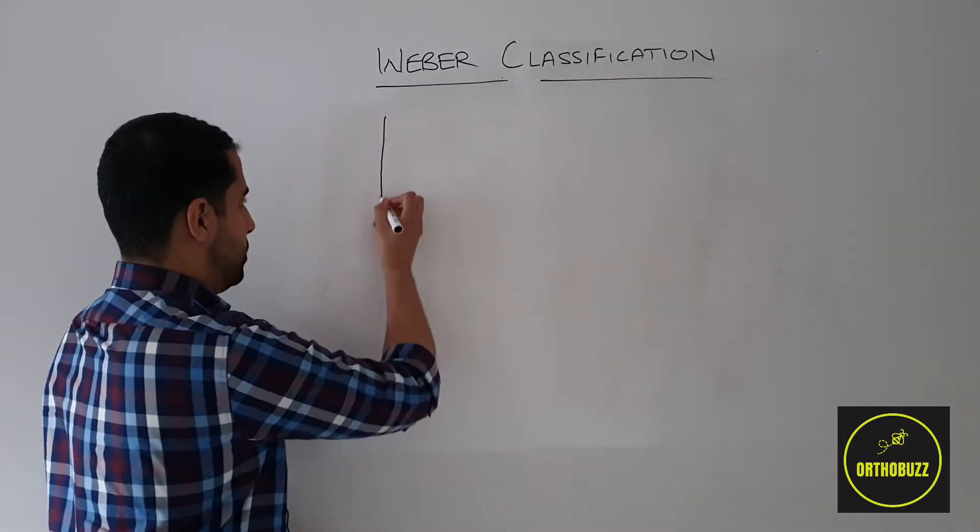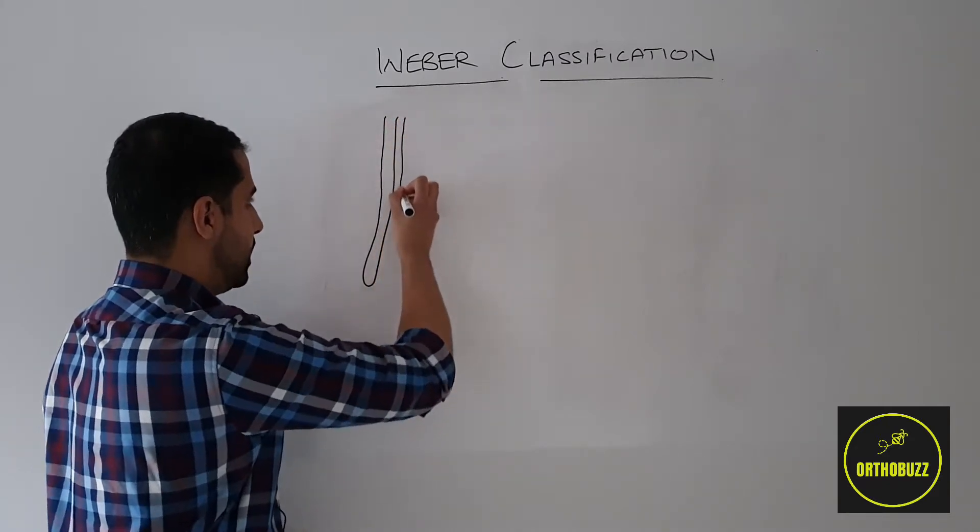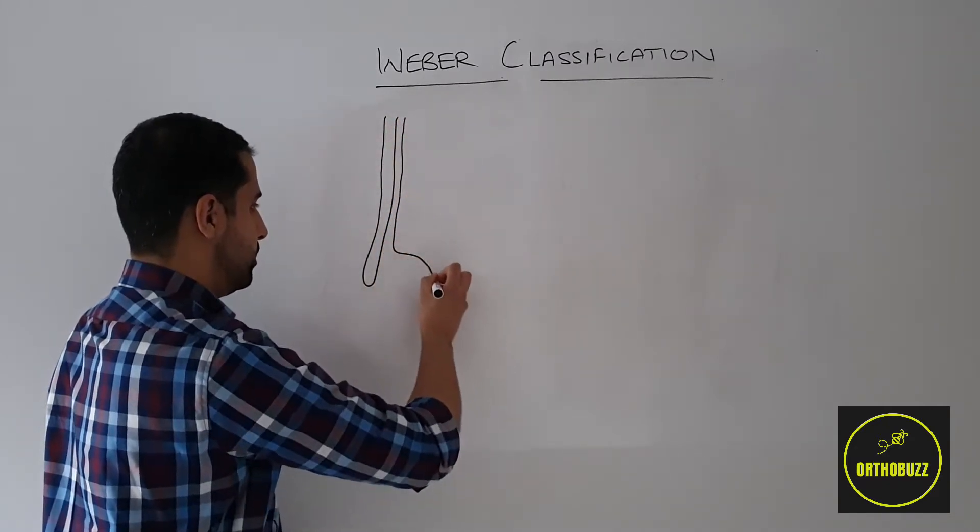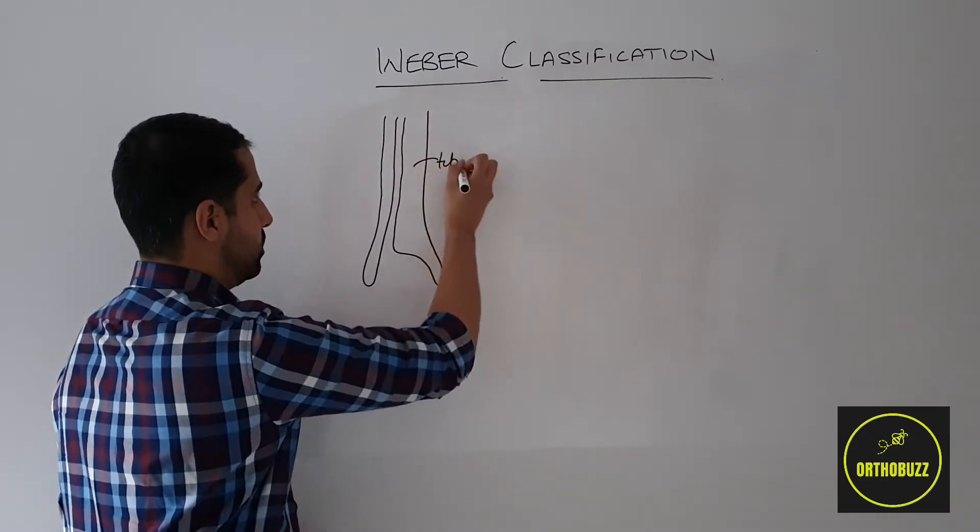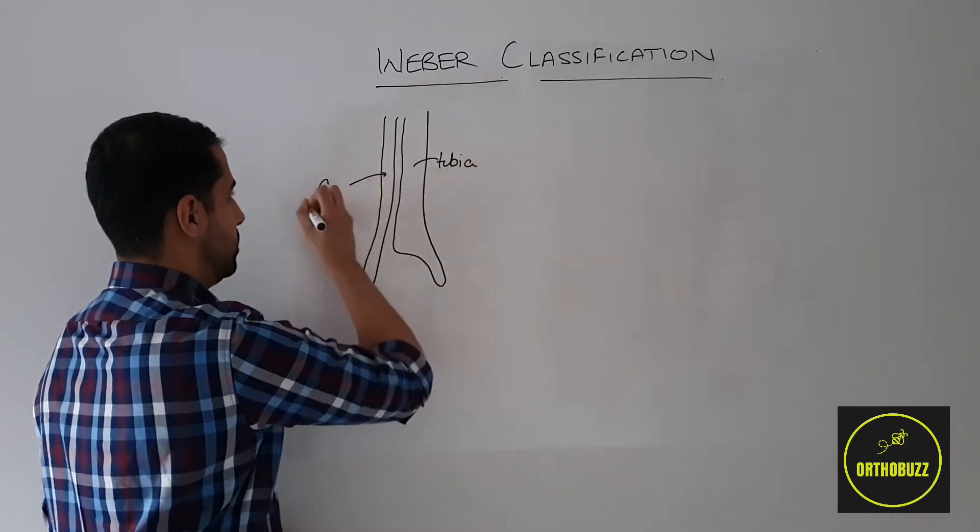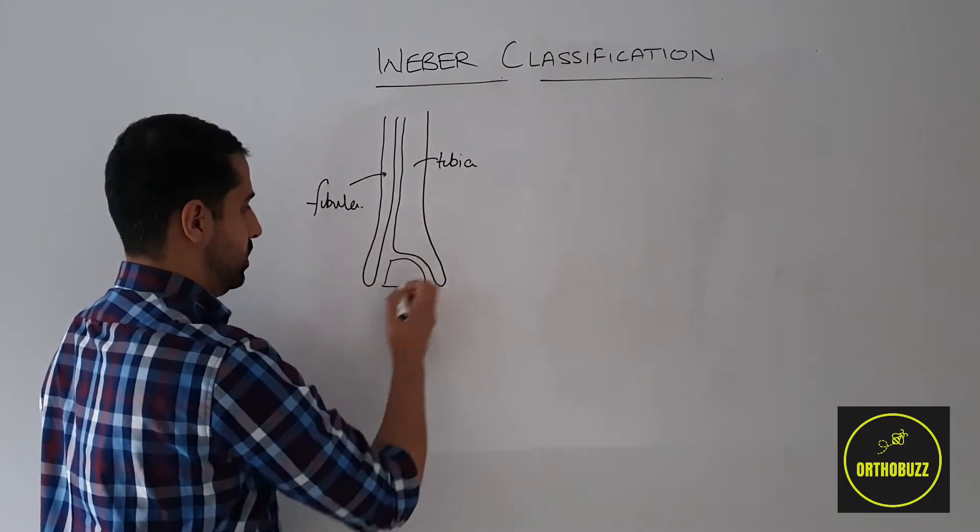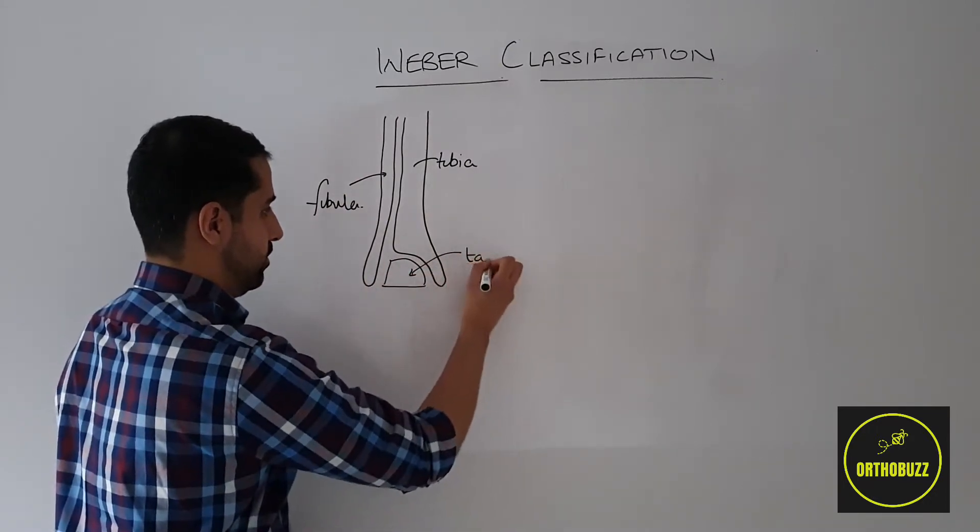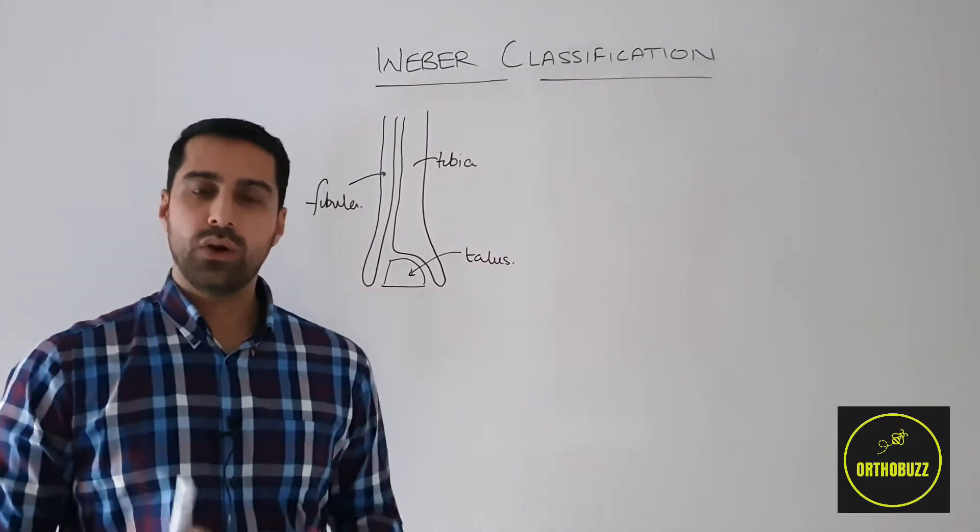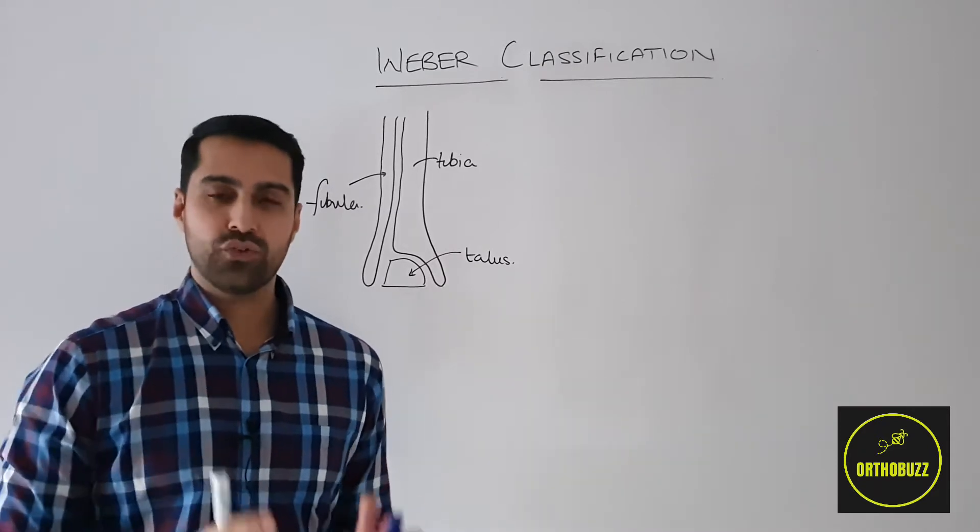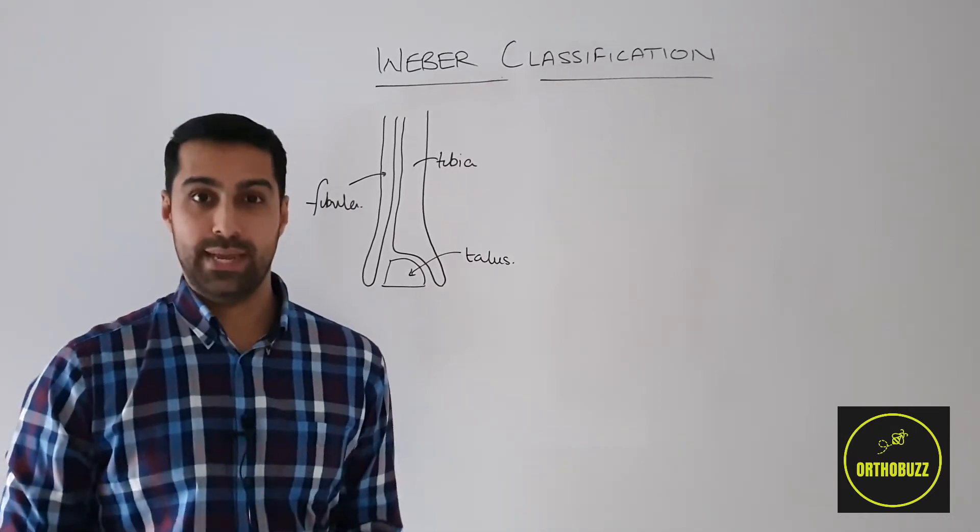So let's start off with a diagram of an AP view of the fibula and the tibia. So tibia here, and fibula here. And here we have the talus. The Weber classification focuses only on where the fracture is in the lateral malleolus. It does not look at any other parts of the ankle, such as the medial malleolus or the talus.